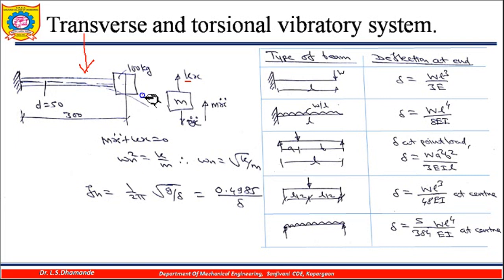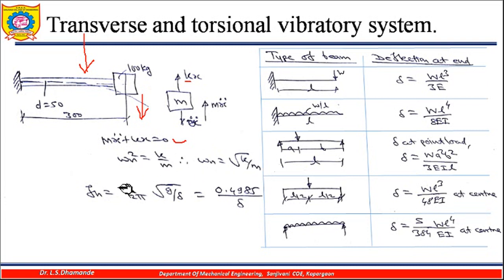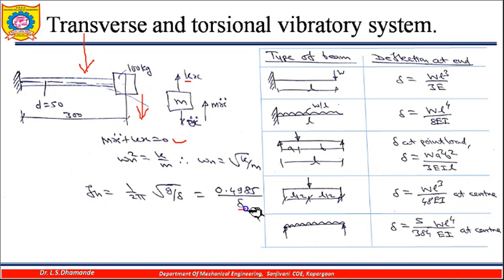As the mass moves downward, the inertia force m·ẍ acts in the opposite direction. Writing the equation of motion gives m·ẍ + kx = 0, the same equation as before. Therefore, omega_n squared equals k/m and omega_n equals the square root of k/m. The natural frequency is f_n = (1/2π)√(k/m), which also equals √(g/δ), and simplifying with g = 9.81 gives f_n = 0.4985 / √δ, where δ is the static deflection.